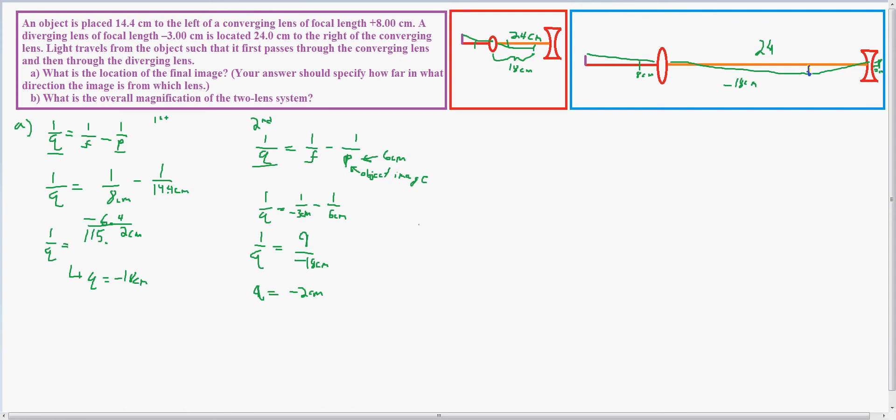That means that the focal point, sorry, not the focal point, the image appearing is 2 centimeters behind that lens, which would answer, which specifies what direction. So it'll be 2 centimeters to the right of the last lens, and I'll specify all the answers for A.